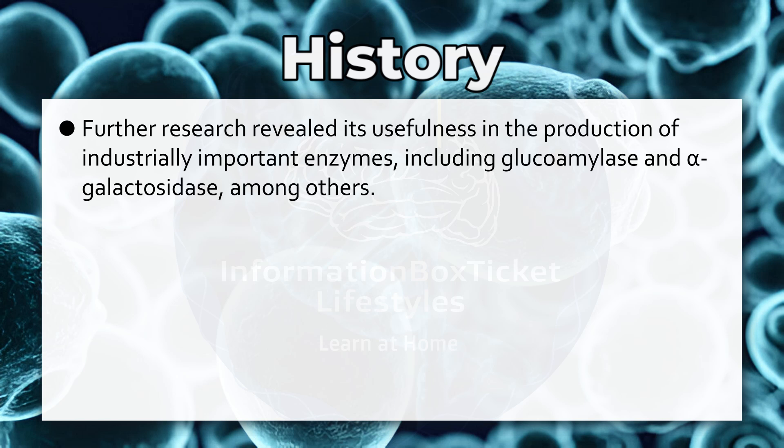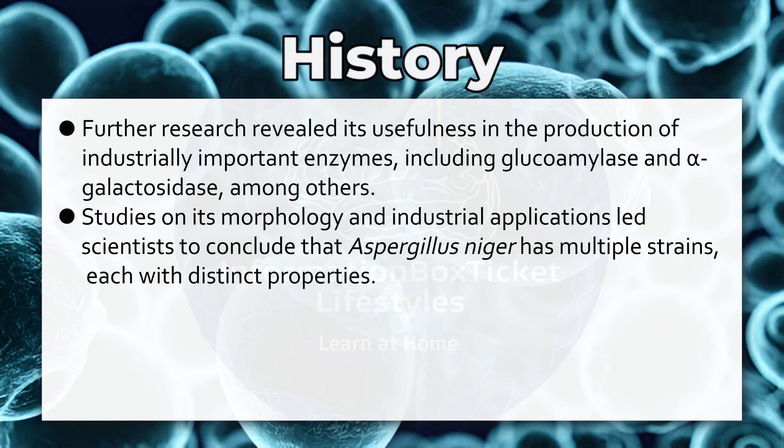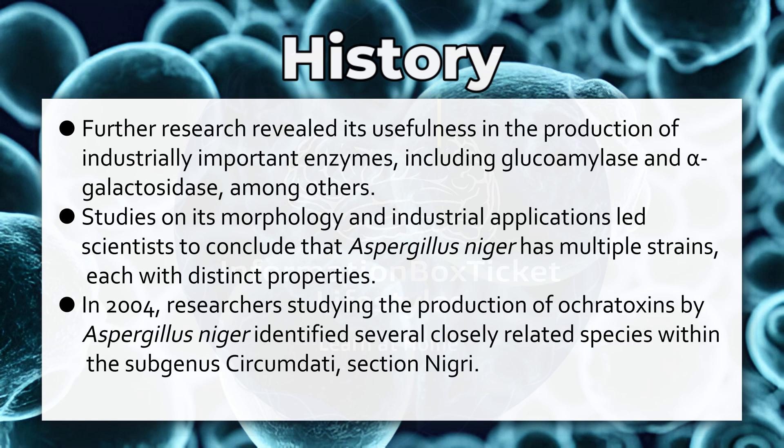Further research revealed its usefulness in the production of industrially important enzymes, including glucoamylase and alpha-galactosidase, among others. Studies on its morphology and industrial applications led scientists to conclude that Aspergillus niger has multiple strains, each with distinct properties. In 2004, researchers studying the production of ochratoxins by Aspergillus niger identified several closely related species within the subgenus Circumdati, Section Nigri.